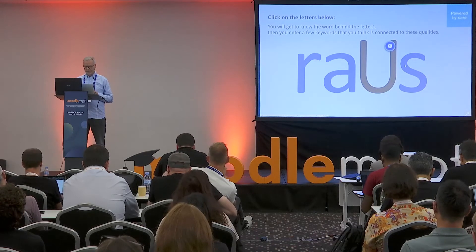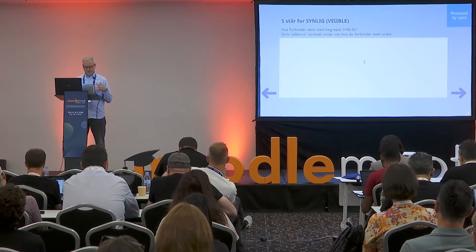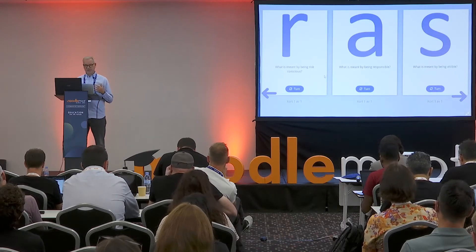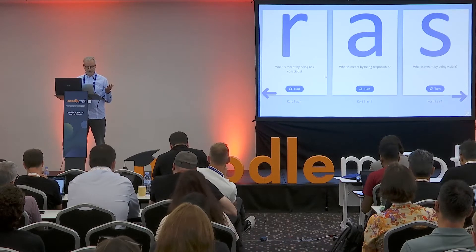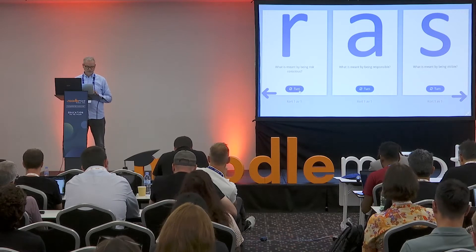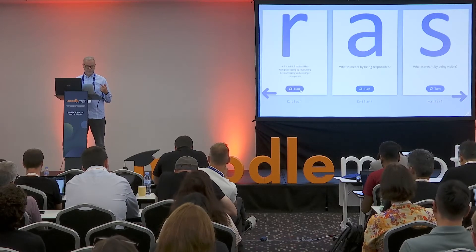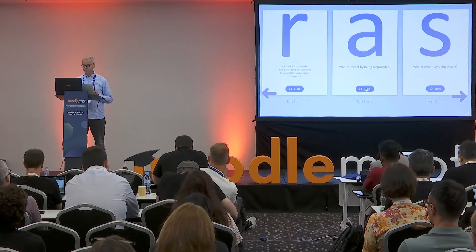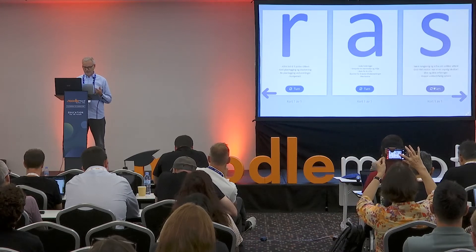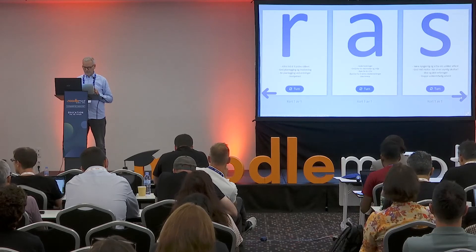When they continue with A and S, they write what they think is connected to 'visible' in this regard. We introduce them to the company's sort of company policy — what do they mean by risk conscious, responsible, and visible. These are dialogue cards, also part of course presentation. They turn the card and read the company's thinking on these different words.